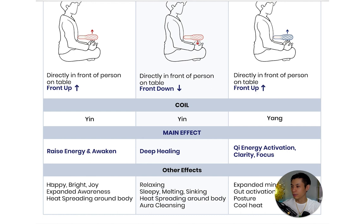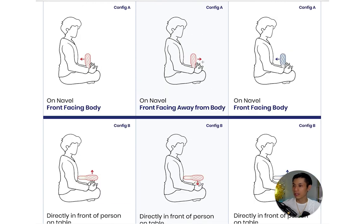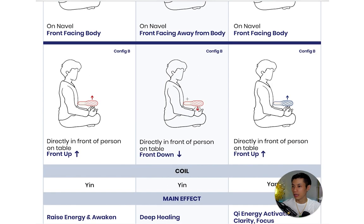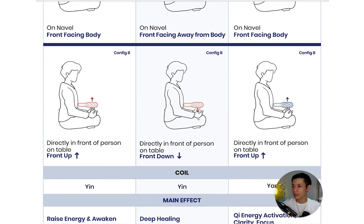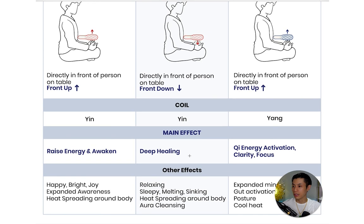In both configurations you get raising energy and awakening. Some other effects you may feel are happiness, brightness, joyfulness, expanded awareness, and heat spreading around your body. Now if you use the yin coil in the other direction — in configuration A facing away from you, or in configuration B facing downwards while horizontal — then you get deep healing, relaxation; you'll feel sleepy, melting, or sinking. Heat will also spread around your body and you'll feel a sense of aura cleansing.